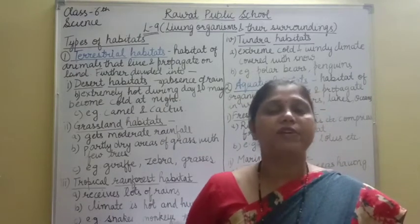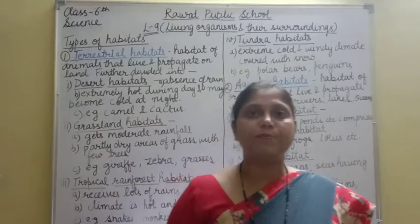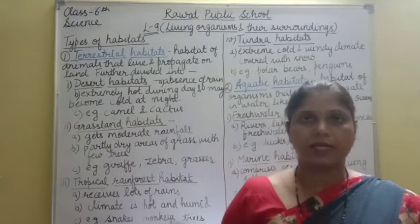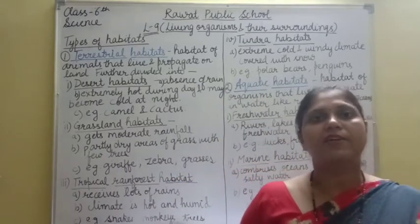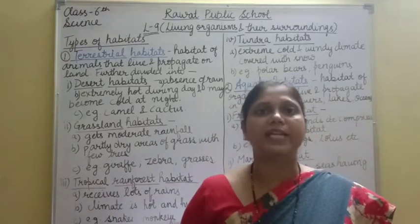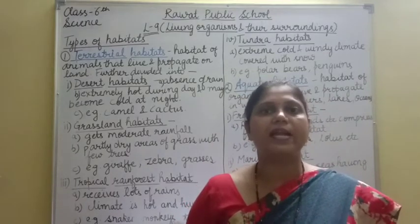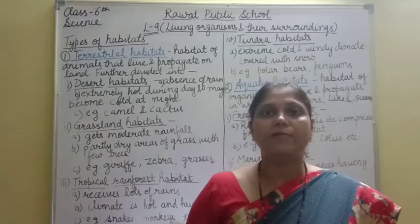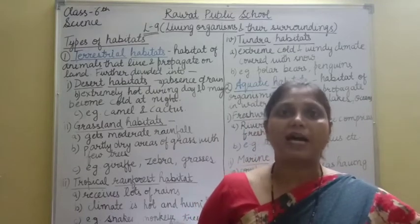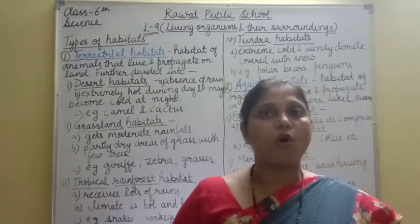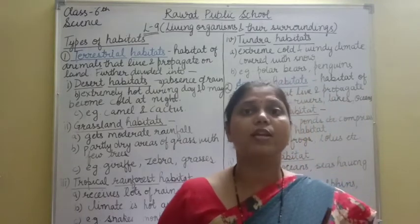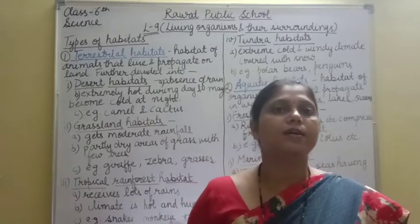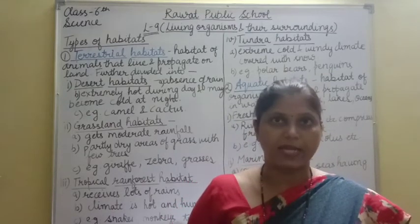Today we are going to study the types of habitat. Different types के जो habitats होते हैं: terrestrial habitat, aquatic habitat, and aerial habitat. Terrestrial habitat means the plants and animals that live on land — जो land पर plants और animals रहते हैं, that all comes under the terrestrial habitat.